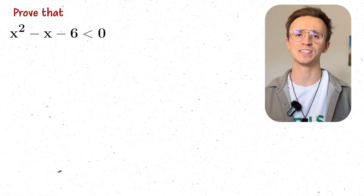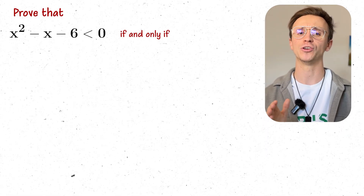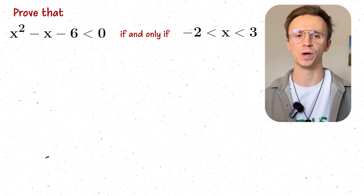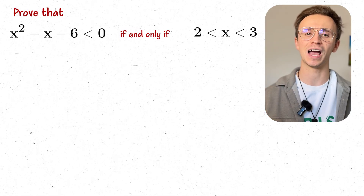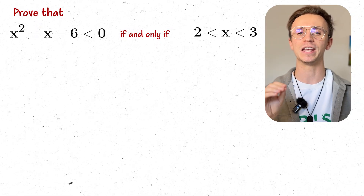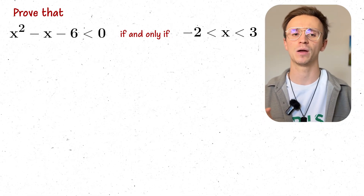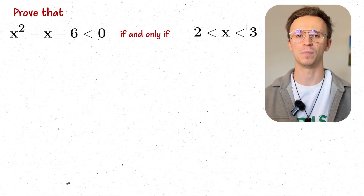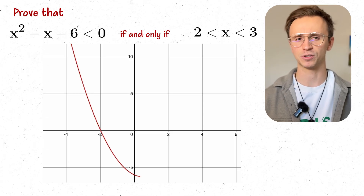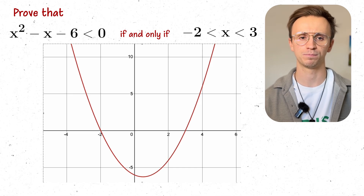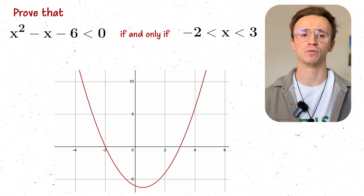Now let's bring in a more mathematical example. Prove that x squared minus x minus six is less than zero if and only if x is between minus two and three. We need to prove this both ways — prove that the only way to have x² - x - 6 < 0 is with x between -2 and 3. First, let's sketch y = x² - x - 6 by factorising it and sketching it as a quadratic. So let's do the first direction of logic.